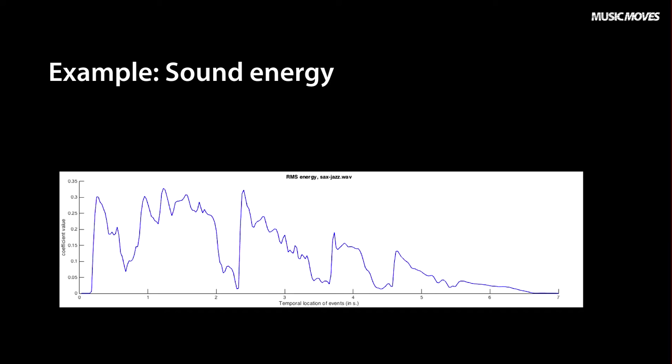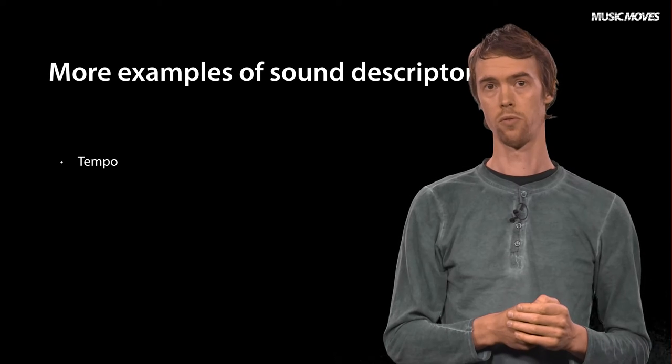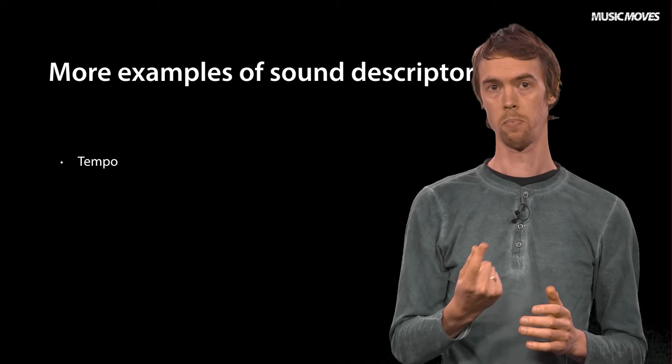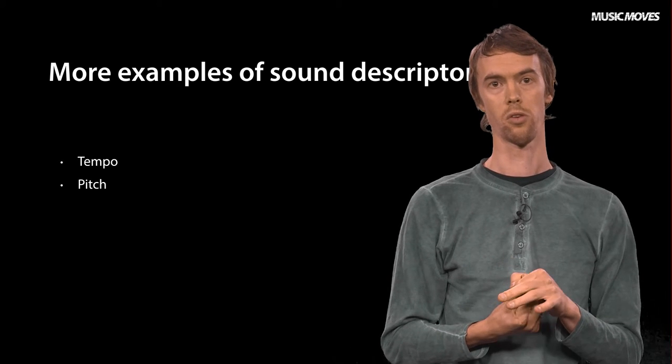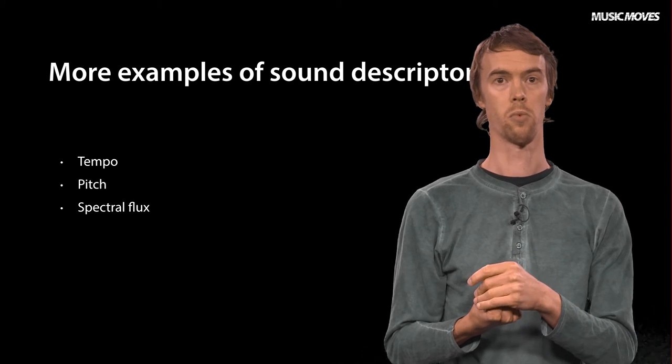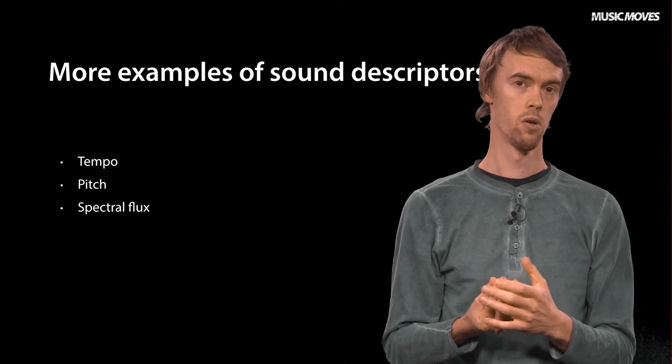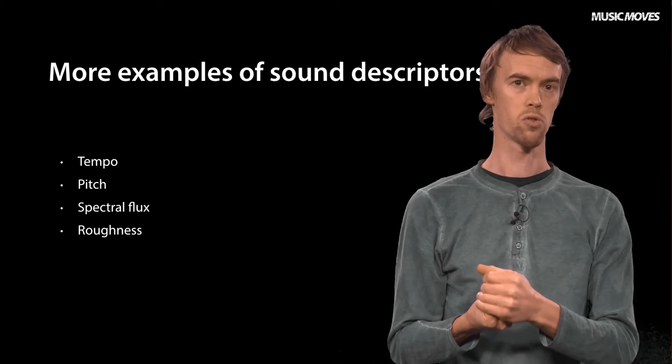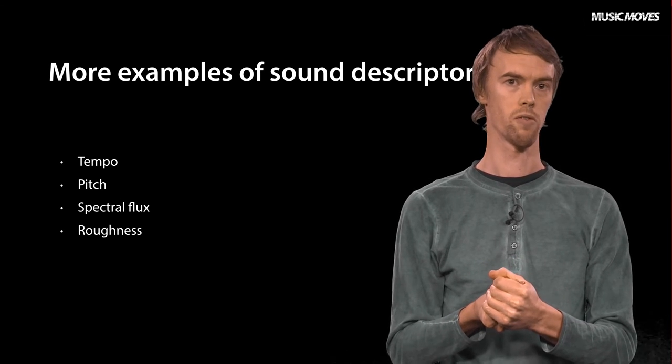Other examples of sound descriptors are tempo, often described in beats per minute; pitch, denoting the fundamental frequency of the sound; spectral flux, describing how much the spectrum changes; and roughness, using a mathematical model to describe a roughness that occurs because of limitations in our auditory system.